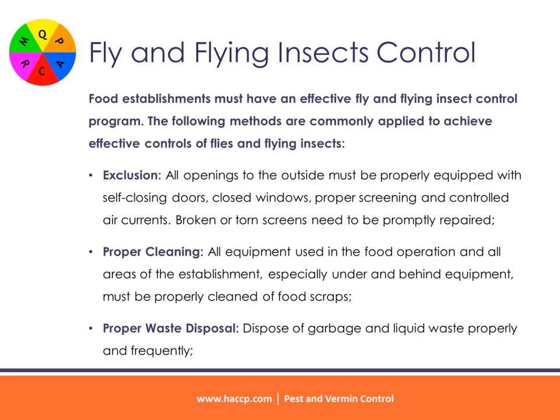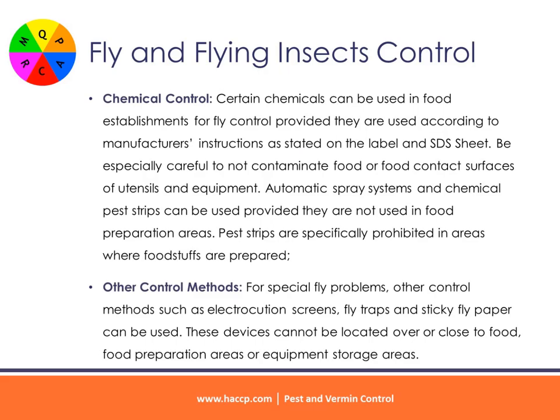Proper waste disposal — dispose of garbage and liquid waste properly and frequently. Chemical control — certain chemicals can be used in food establishments for fly control provided they are used according to manufacturer's instructions as stated on the label and SDS sheet. Be especially careful not to contaminate food or food contact surfaces. Automatic spray systems and chemical pest strips can be used provided they are not used in food preparation areas. Pest strips are specifically prohibited in areas where food stuffs are prepared. Other control methods — for special fly problems, electrocution screens, fly traps and sticky fly paper can be used, though these devices cannot be located over or close to food, food preparation areas or equipment storage areas.